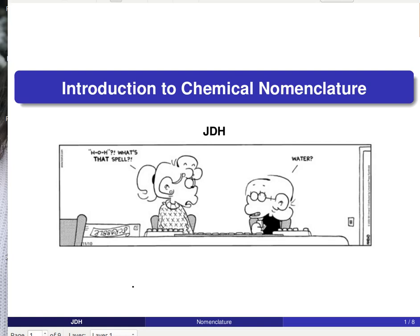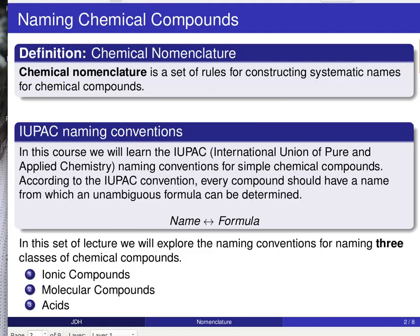In this lecture, we are going to introduce the topic of chemical nomenclature. Chemical nomenclature essentially is a set of rules for naming chemical compounds.